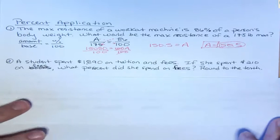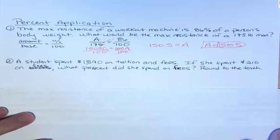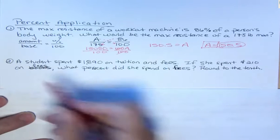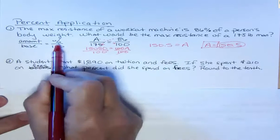Second one. A student spent $1,890 on tuition and fees. If she spent $210 on fees, what percent did she spend on fees? Round to the nearest tenth. So we again want amount over base is percent over 100.